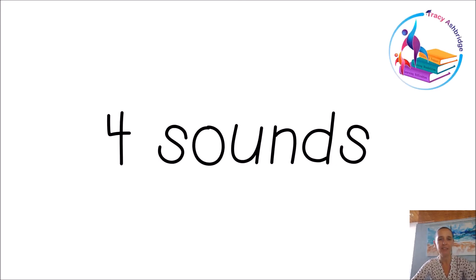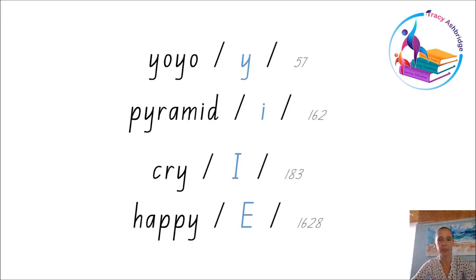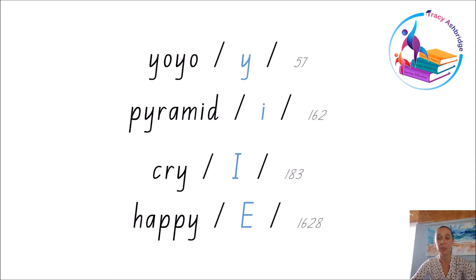There are four sounds that letter Y makes in words, not just the one. It makes the Y sound at the beginning of words when it's a consonant letter, but it only actually does that in 57 words in the English language. It makes the sound ih in pyramid — not particularly common, but a couple of hundred words nearly. It makes the I sound in cry. But the most common thing it does is actually make the E sound in a word like happy, which is around 1628 words — and we didn't ever teach that. So it's really important that children know all four sounds that letter Y can make. At the end of words, the end of syllables, and inside a syllable, it's actually going to be a vowel, not a consonant.